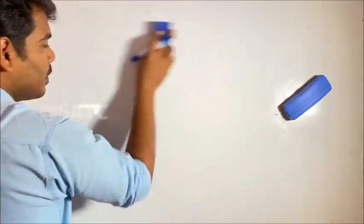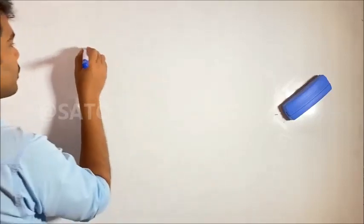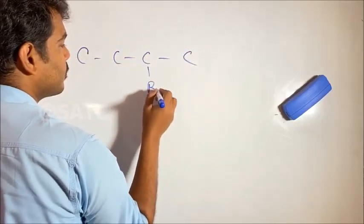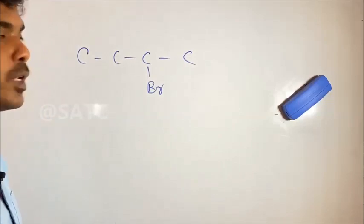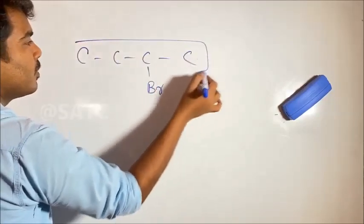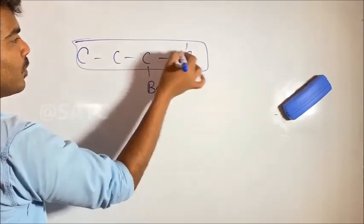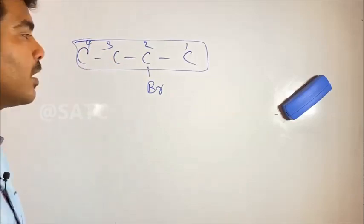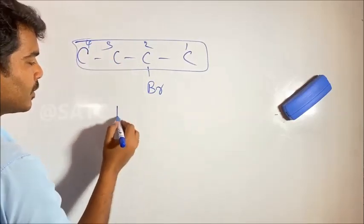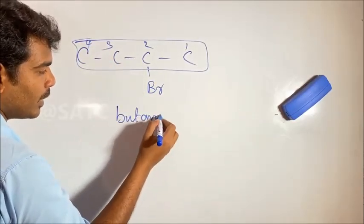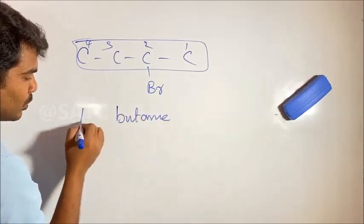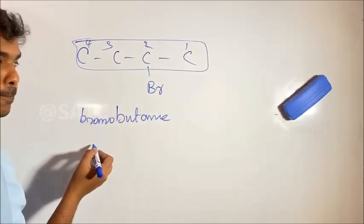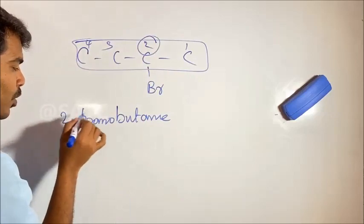Another example: we select the longest chain. The chain has 4 carbons. Numbering gives position 2 for the bromine atom. Since there is a single bond, it is 'ane'. So the name is 2-bromobutane.